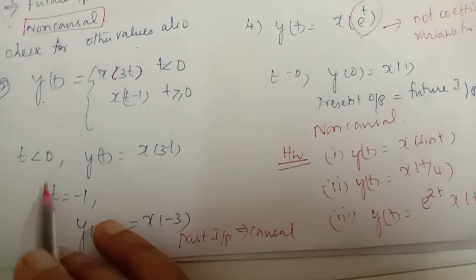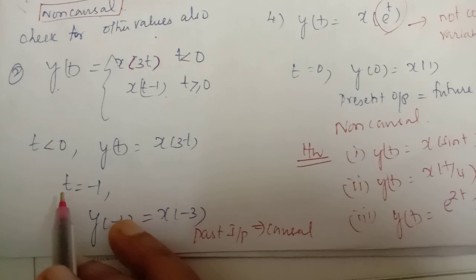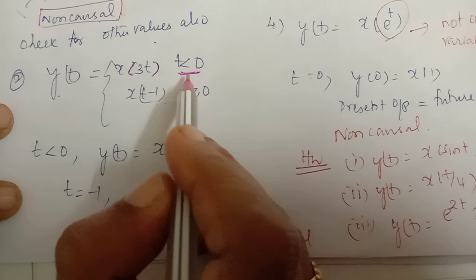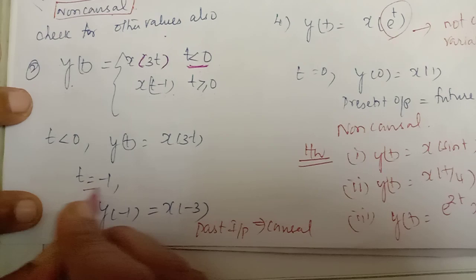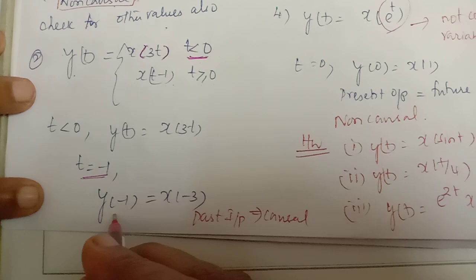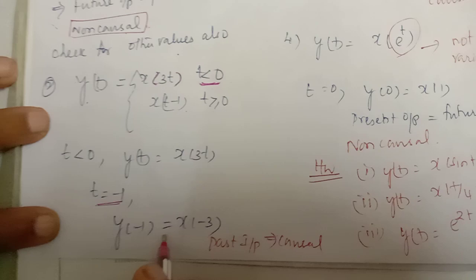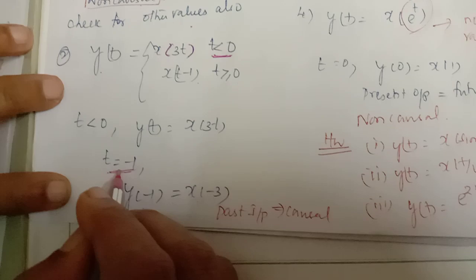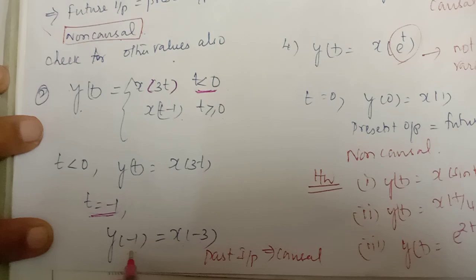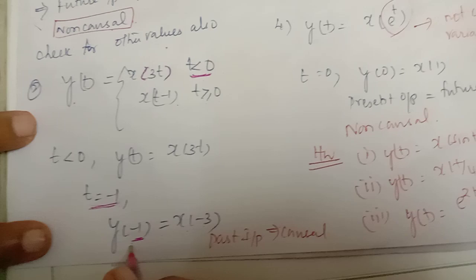As in the previous example, we check by taking specific values of t. For the first interval, t < 0, we take t = -1. During this interval, y(t) = x(3t), so y(-1) = x(3 × -1) = x(-3). This shows the output at t = -1 depends on x(-3).